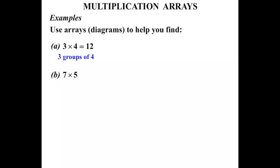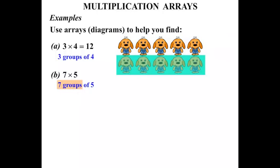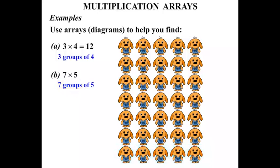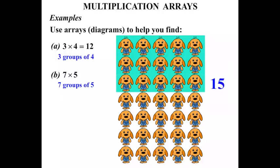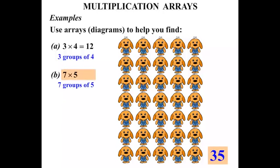Part B: seven times five — seven lots of five. We can think of that as being seven groups of five. What about five puppy dogs? One, two, three, four, five — very cute, aren't they? So that's our one group, and we want seven groups. So we've got one, two, three, four, five, six, seven groups. Let's count them in fives. Five, ten, fifteen, twenty, twenty-five, thirty, thirty-five. So seven times five, or seven lots of five, equals thirty-five.